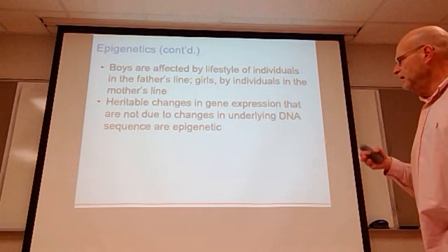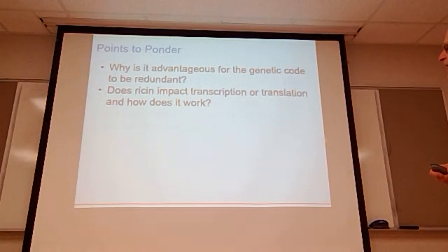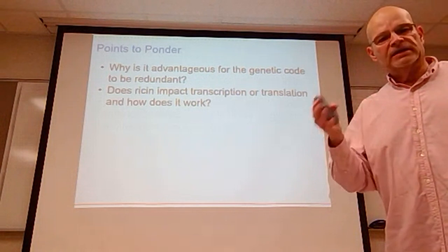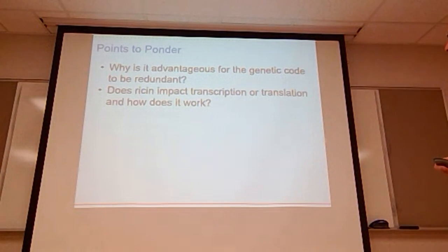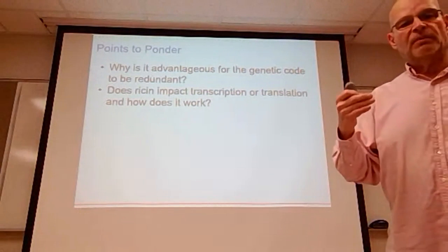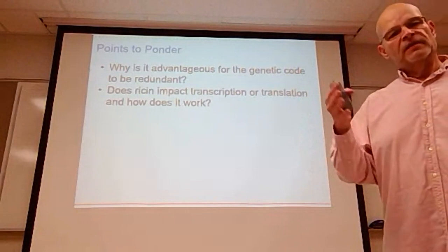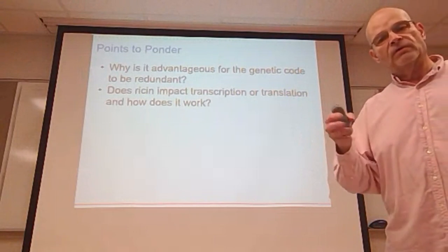Heritable changes in gene expression that are not due to changes in underlying DNA sequences are called epigenetic. It is advantageous for the genetic code to be redundant because redundancy prevents mistakes — a lot of redundancy means mistakes can be fixed. Ricin impacts translation by binding up the small subunit of the ribosome; the small subunit can't attach to the transcript, so translation cannot occur. If you have questions, email me at russell@uaptc.edu or use the course messenger tab. See you next time.